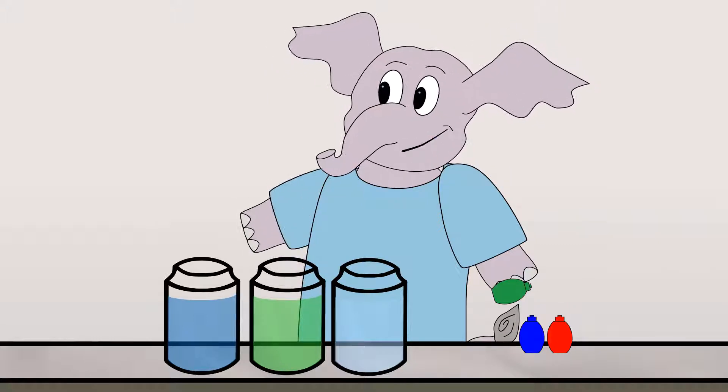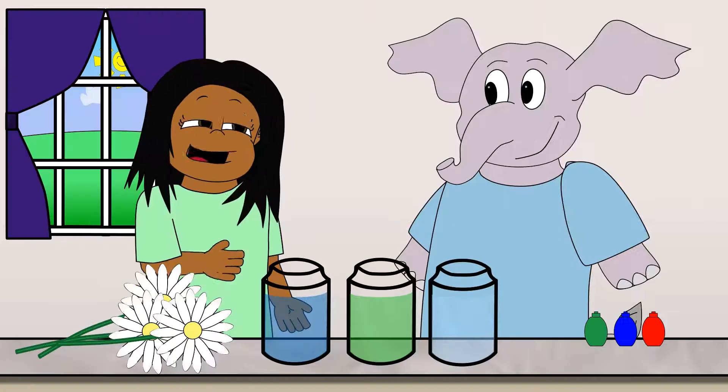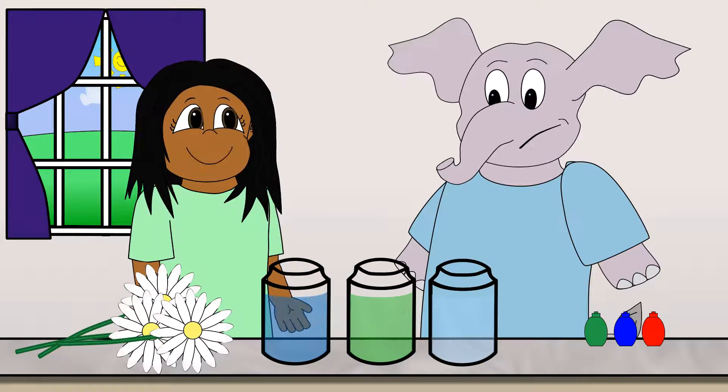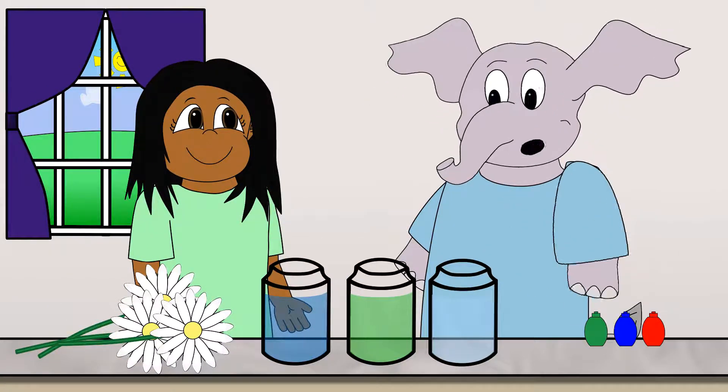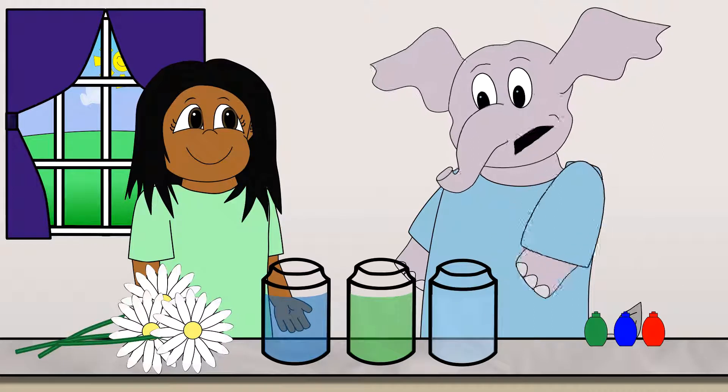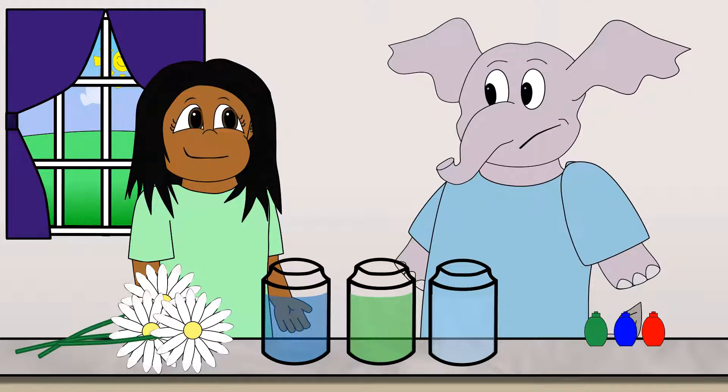What do we do next, Asha? We put the flowers in the jars. But Asha, we didn't put any color in the last jar. That's our control.